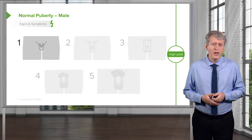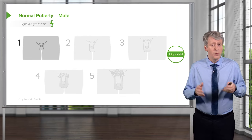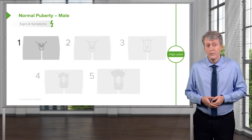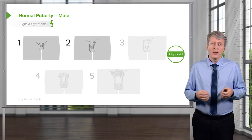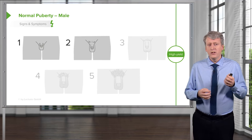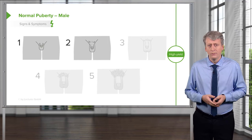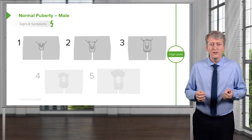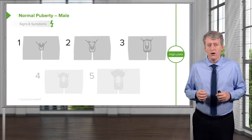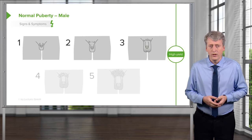Let's go through the Tanner stages for boys. Tanner 1 is no pubic hair at all. Tanner 2 is the growth of pubic hair, typically just a few hairs — a countable number. Tanner 3 is easiest to remember as too many to count. If there are so many pubic hairs you couldn't count them — 50, 100 — that's probably Tanner 3.